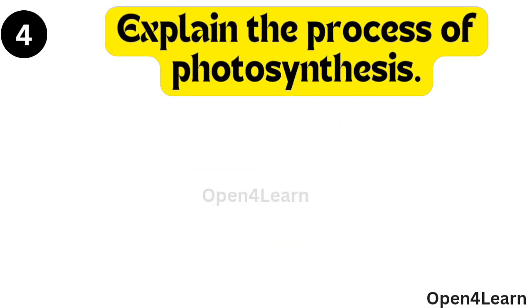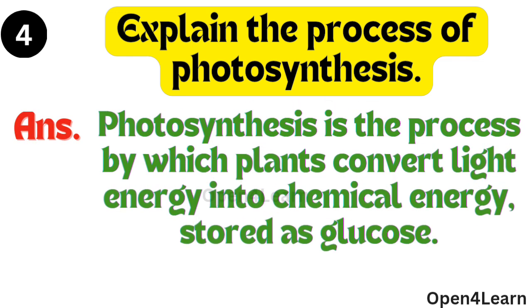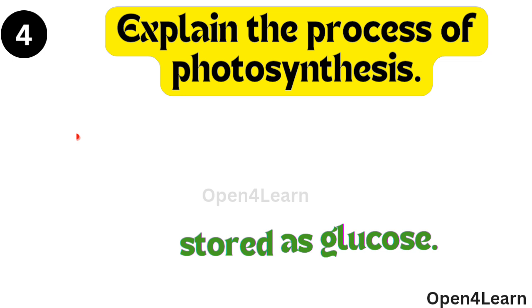Question, explain the process of photosynthesis. Answer, photosynthesis is the process by which plants convert light energy into chemical energy stored as glucose.